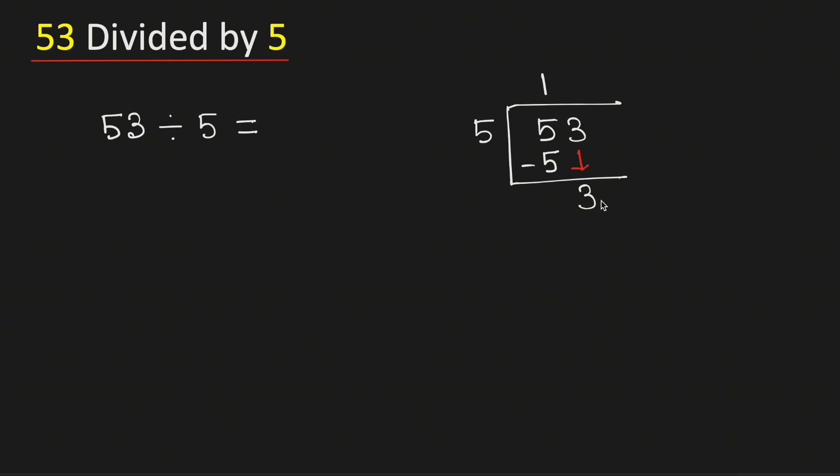As we have brought down this number here, so we need to divide it. We know that 5 times 0 is 0. Subtract, we get 3.